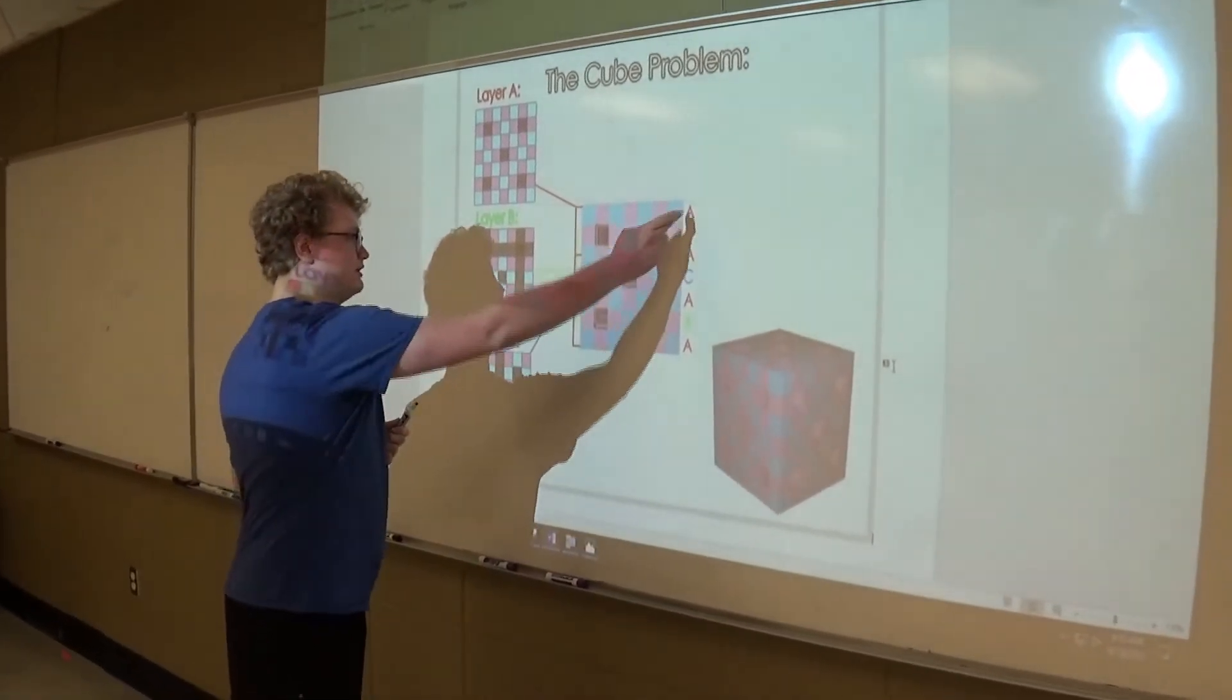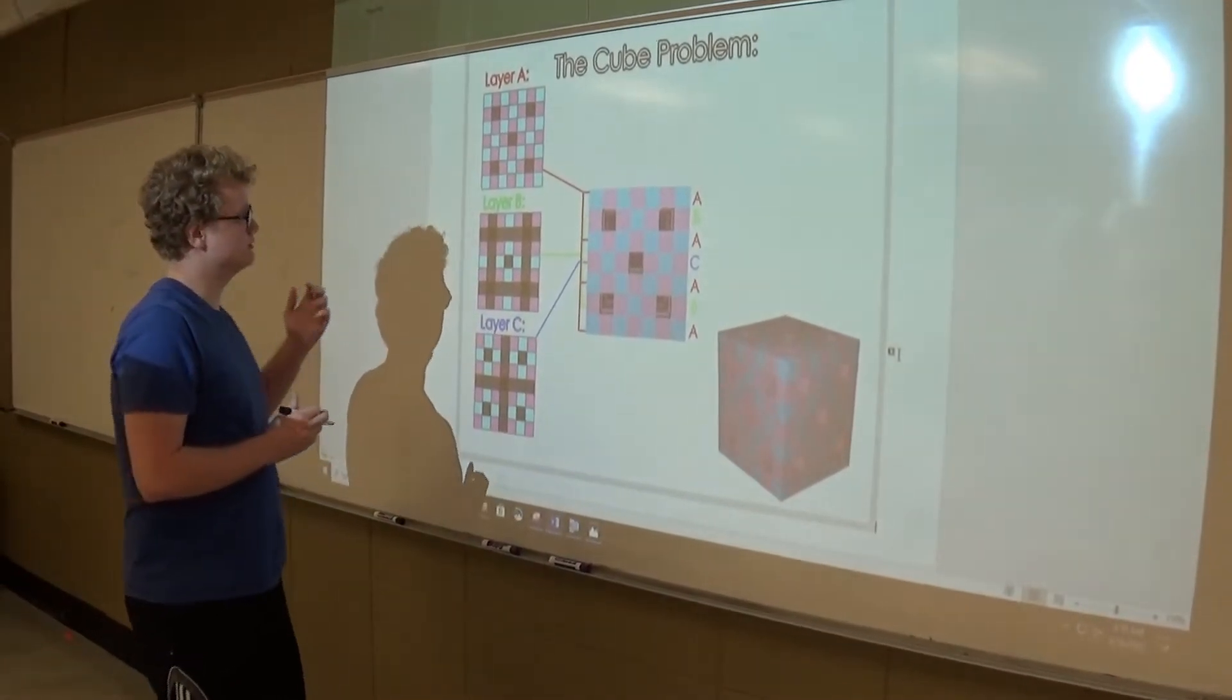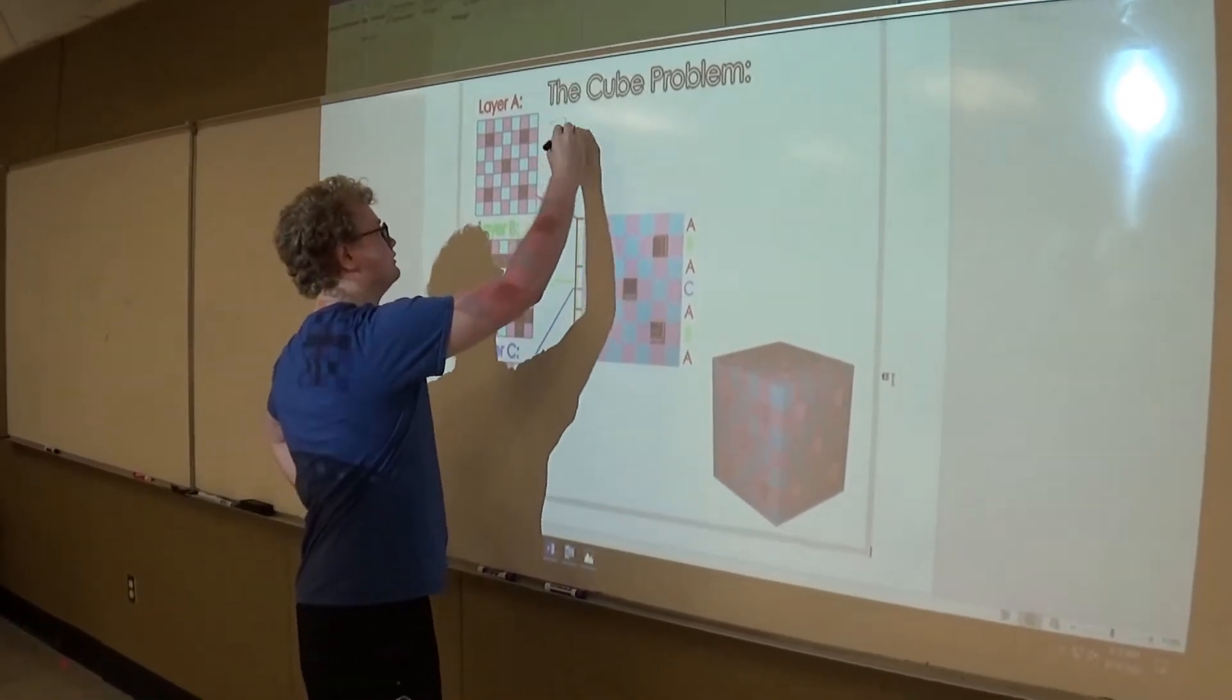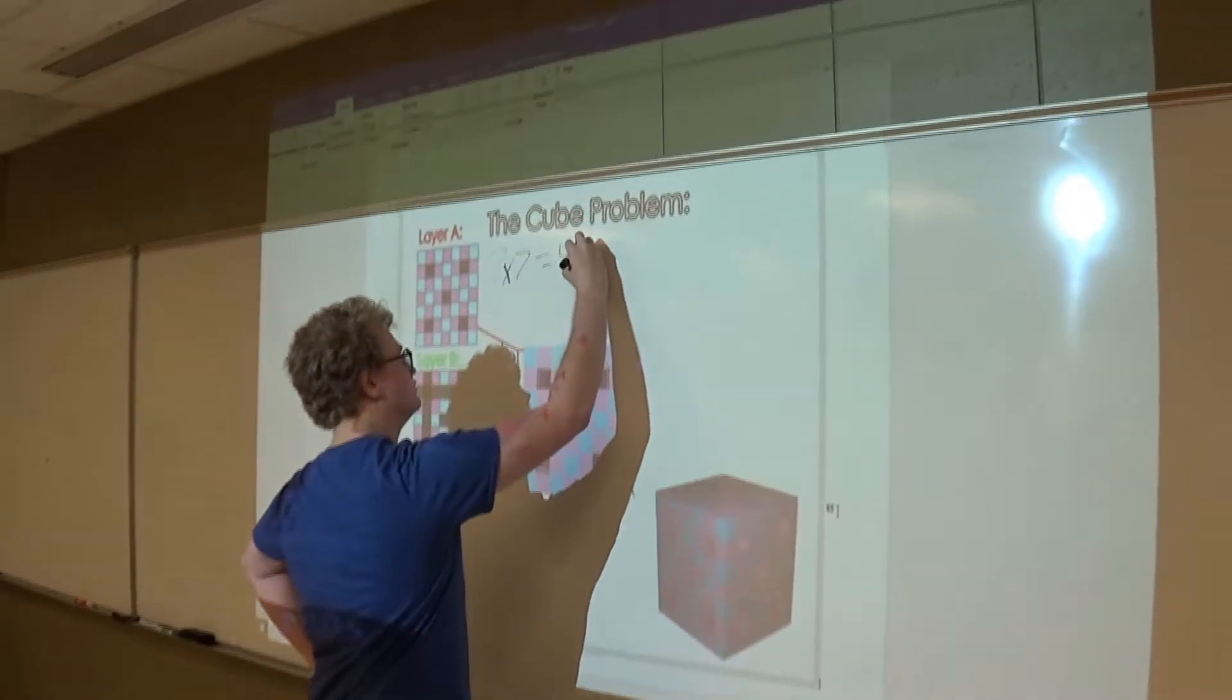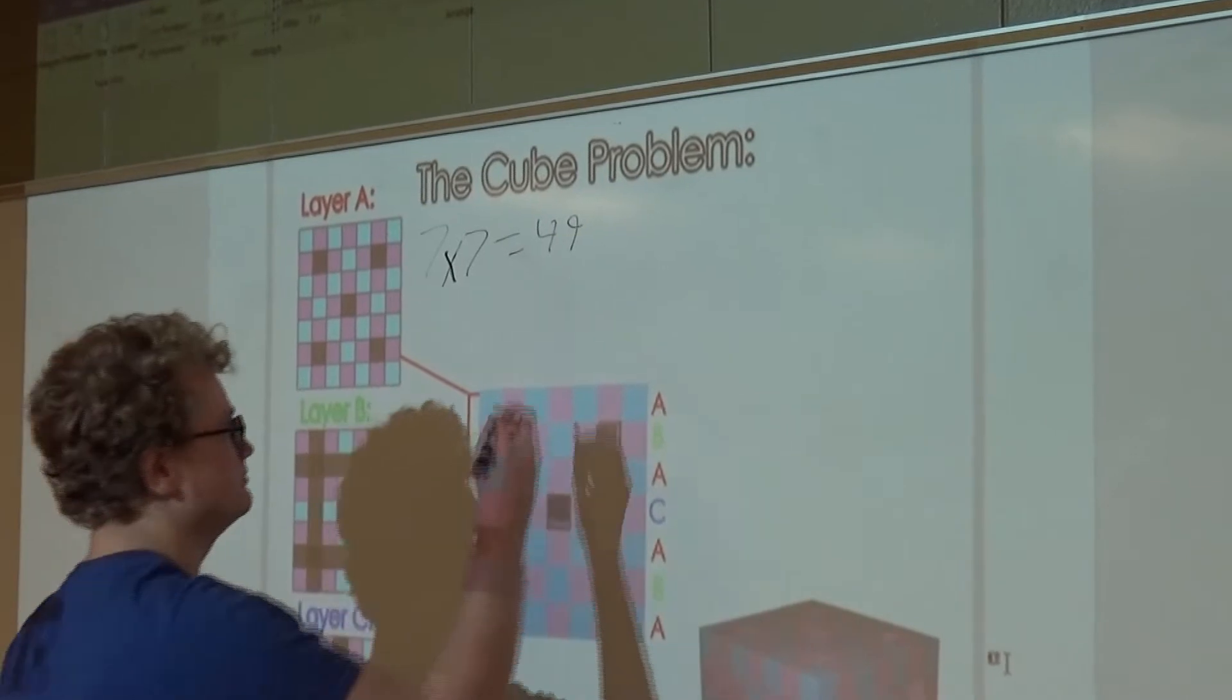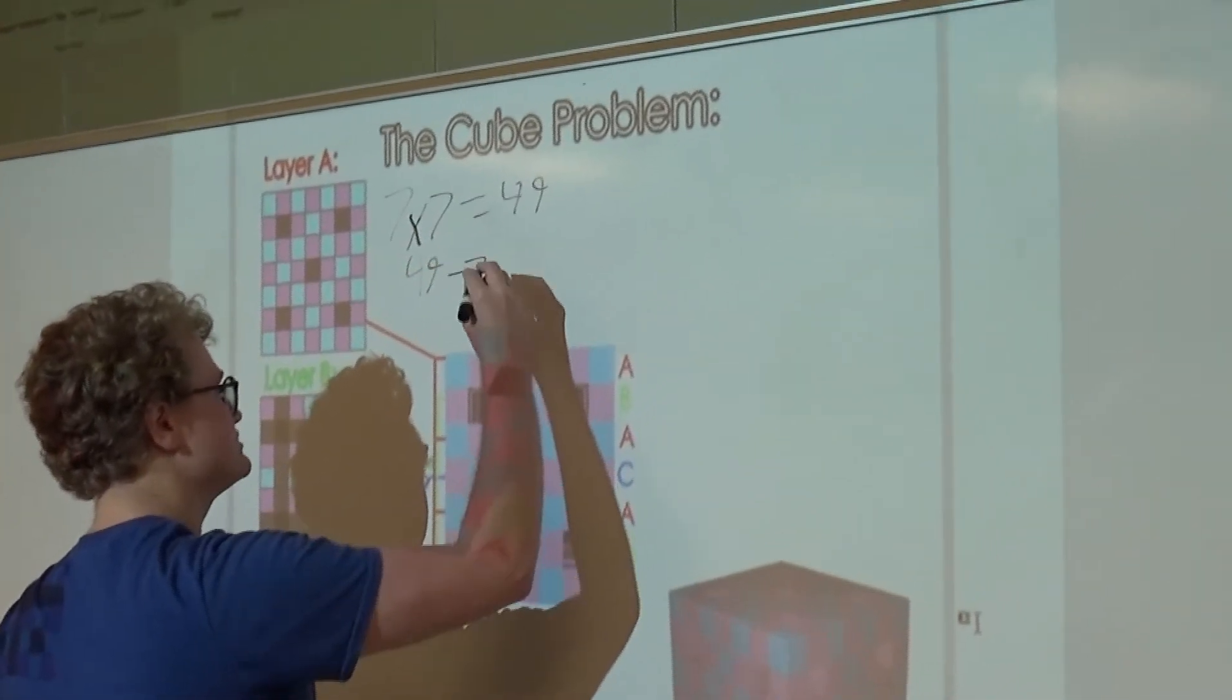These four layers are all the same and they all have five cubes missing. Each layer has a total of 49 cubes minus the missing cubes inside of it. So 49 minus 7...